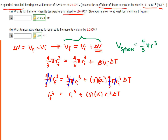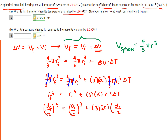The problem gives us the diameter of the sphere, and we need to solve for the final diameter after it has been heated. Since the radius is half the diameter, we can say that (D_f / 2) cubed equals (D_i / 2) cubed plus 3 times the coefficient of linear expansion times (D_i / 2) cubed multiplied by the change in temperature.